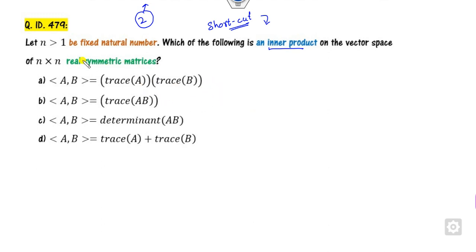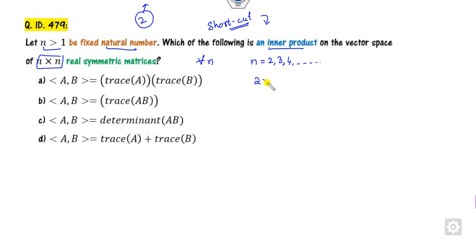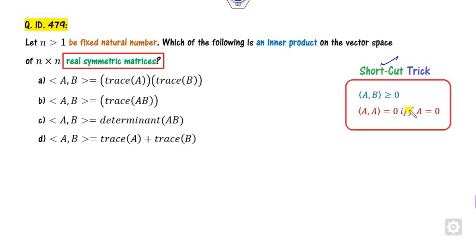If you read this statement very carefully: N is a fixed natural number. Which of the following is the inner product space of N cross N? Now, this should hold for all values of N. So what you can do is consider N as 2, 3, or 4 as per your convenience — I will consider a 2 cross 2 matrix. Whenever there is a question related to the inner product space, always try these shortcut tricks. A very simple trick: the inner product is positive, and equals 0 if and only if the matrix itself is 0.